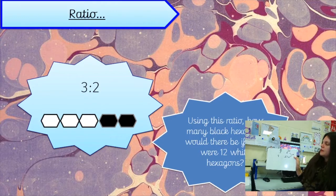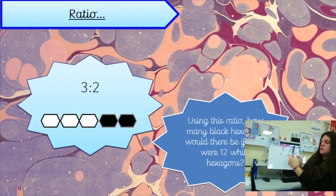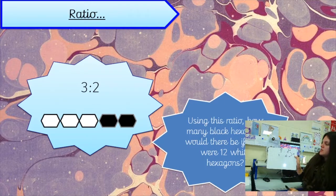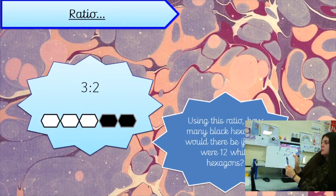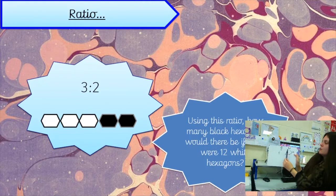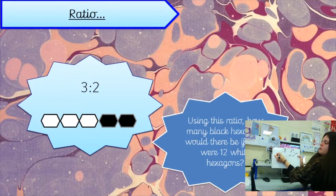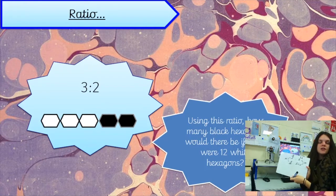When we set out our working today, we have to look at the different parts and the information given, which is why I've set mine out like this. We're going to use bar models as well. If we had three white hexagons for every two black hexagons and we ended up with 12 white, we look at the relationship: to get from three white to twelve white we've multiplied by four. So three times four is twelve, and what we do on one side we do on the other — two times four is eight. There would be eight black hexagons.